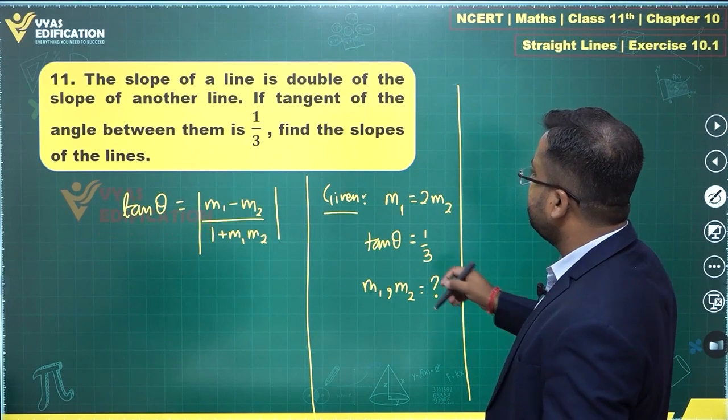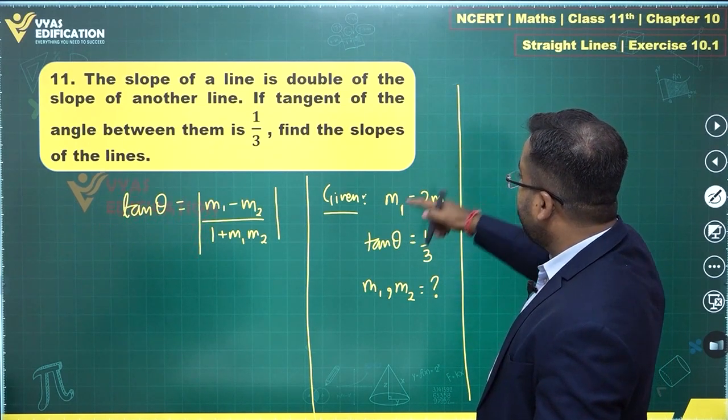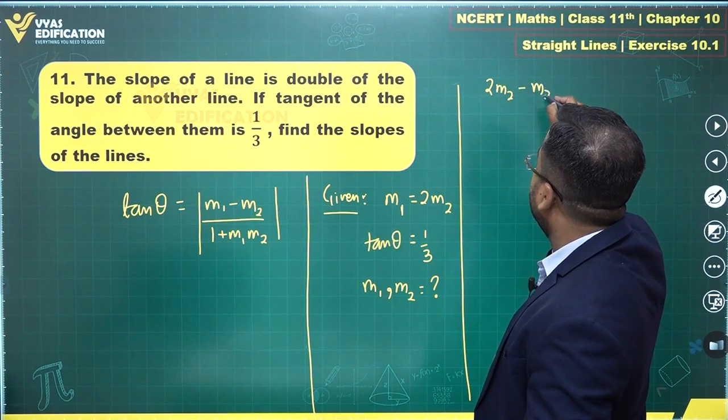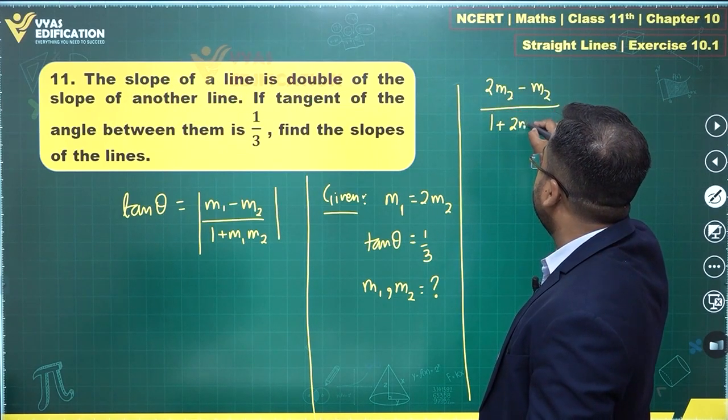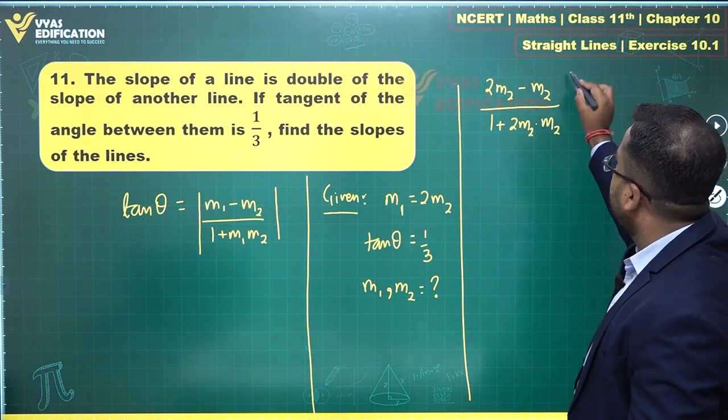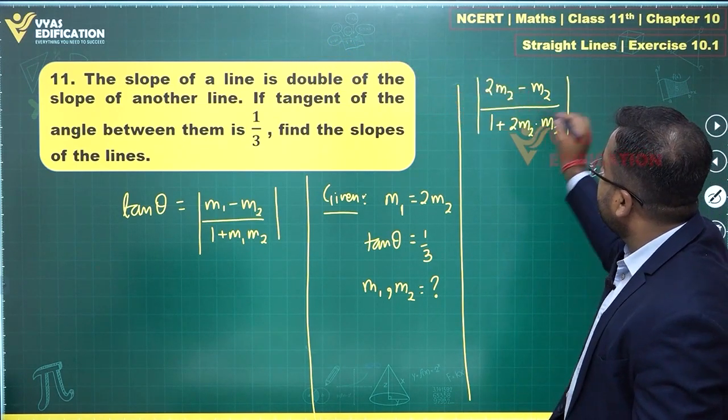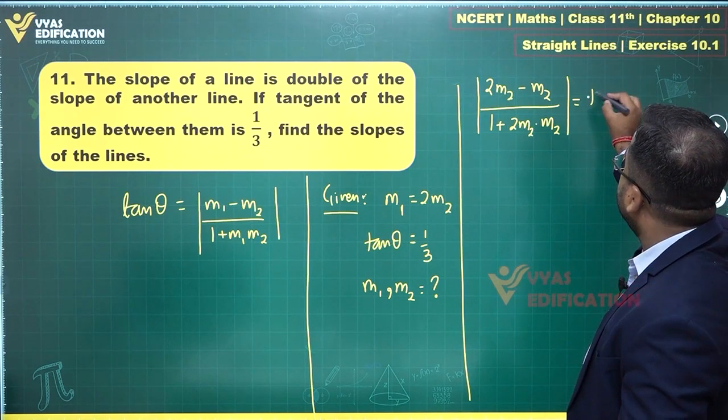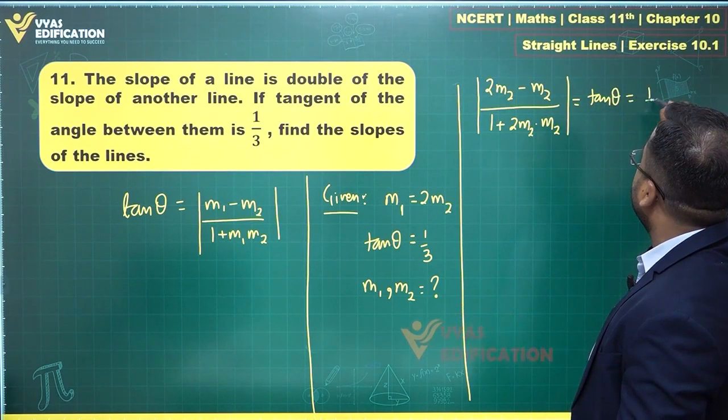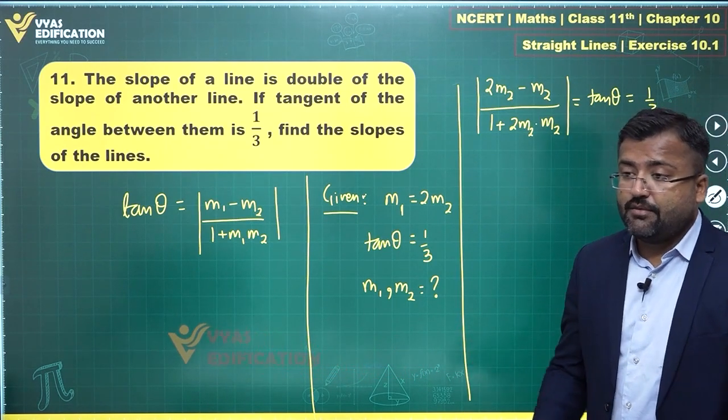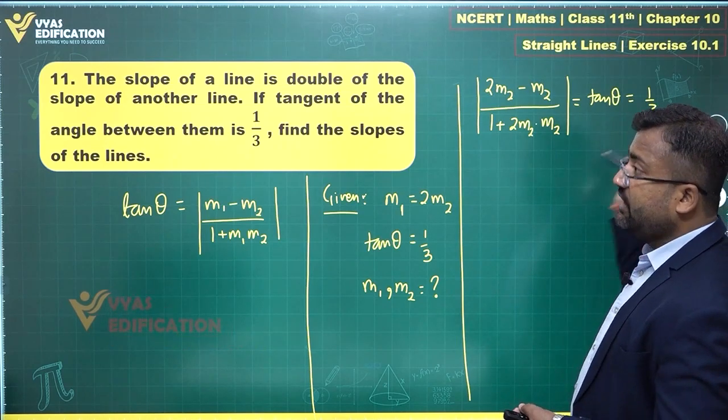We'll apply this formula and see where does that take us. So we have M1 which is 2M2. So 2M2 minus M2 upon 1 plus 2M2 times M2. This is M1 minus M2 upon 1 plus M1 M2. This modulus is equal to tan theta, and this tan theta is further equal to 1 by 3.